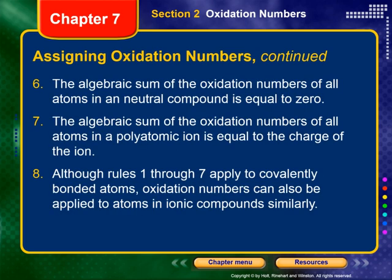Number six: the algebraic sum of the oxidation numbers of all atoms in a neutral compound is equal to zero. That should sound familiar from balancing ionic charges — it's essentially the same rule, just using oxidation numbers instead. Number seven, very similar: the algebraic sum of the oxidation numbers of all atoms in a polyatomic ion is equal to the charge of that ion. For example, for ammonium NH4⁺, the algebraic sum of all oxidation numbers must equal plus one.